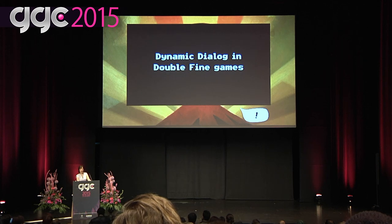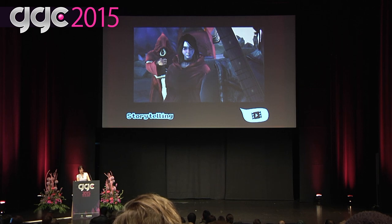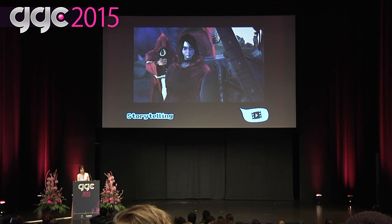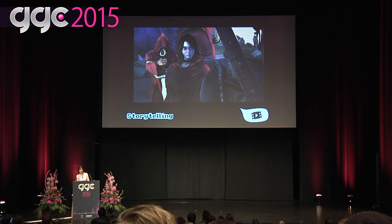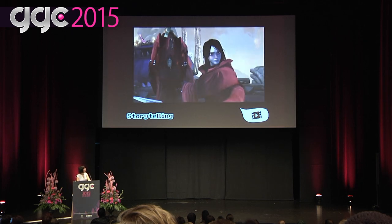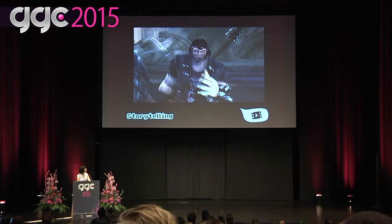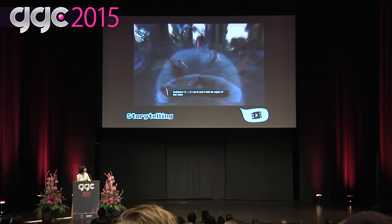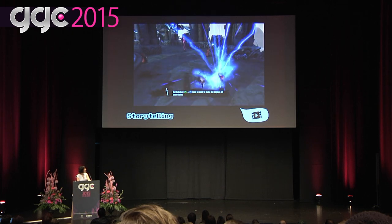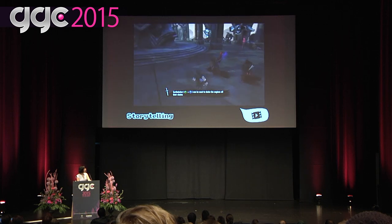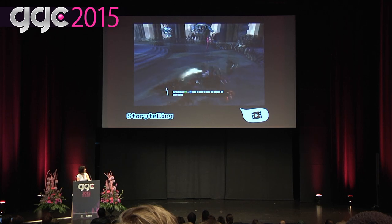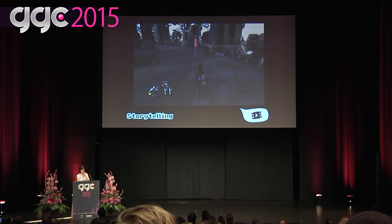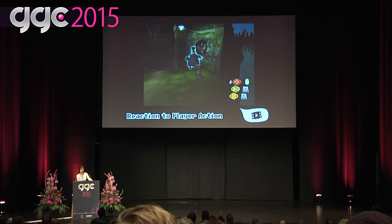So where do we use dynamic dialogue in Double Fine games? One simple example is storytelling outside of cutscenes. In this clip from Brütal Legend, Ophelia and Eddie meet for the first time. They have their initial exchange in the cutscene, but we didn't want to pause the action for too long, so we continued their story exposition as they were fighting, making sure less important lines didn't interrupt the dialogue. We also use dynamic dialogue for reactions to player actions — in this video, Raz tries out his psychic powers on Boyd: telekinesis, pyrokinesis, and punching.